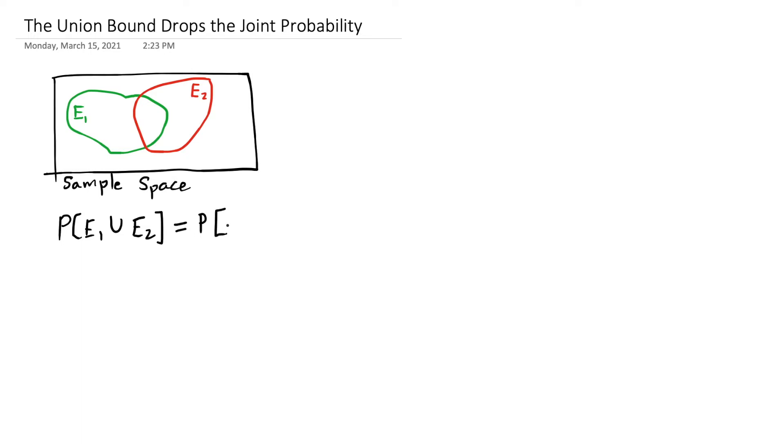From the axioms of probability, we have an expression where we take the probability of e1 plus the probability of e2, and we correct for the fact that the area of e1 and the area of e2 has this overlap region, which gets counted twice unless we subtract the probability of that joint probability. I'll write it here as e1 cap e2.